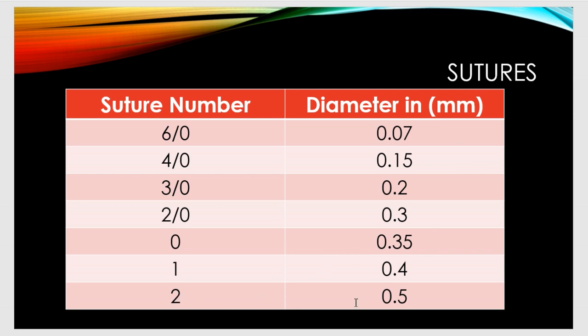Number 2-0 is 0.3 millimeters and is commonly used in surgery. The suture number is directly related to the diameter of the thread.